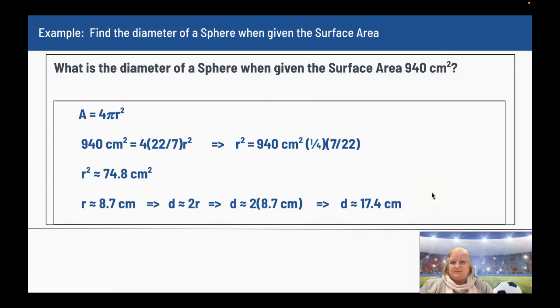So in summary, your surface area for a sphere, a ball, is surface area equals 4 pi r squared.